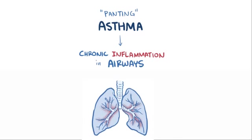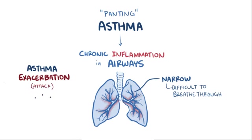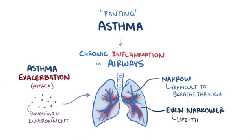Asthma comes from the Greek word for panting, which makes sense because it causes chronic inflammation of the airways, making them narrow and more difficult to breathe through. People with asthma can have asthma exacerbations or asthma attacks, which are usually triggered by something in the environment which causes immune cells to generate inflammation in the lungs, which can make them even narrower and potentially be life-threatening.